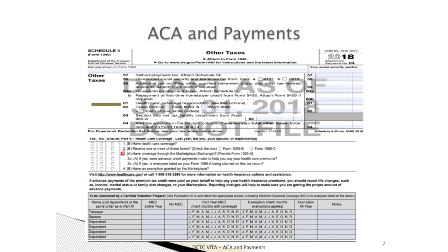The law says that everyone is to be covered by some form of minimum essential coverage for the entire year. If the taxpayer did not have minimum essential coverage all year, or did not have an exemption from health care coverage, then the taxpayer may be liable for what is termed individual responsibility in the form of additional tax on line 61. Feel free to use the dark shaded area on Form 13614-C to identify who on the taxpayer's return had or did not have health care coverage.